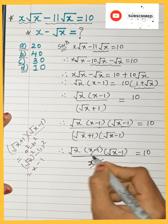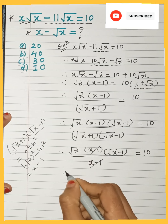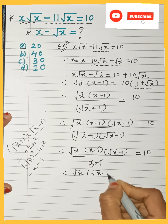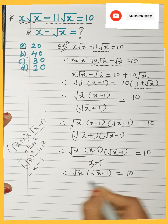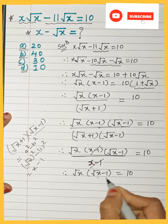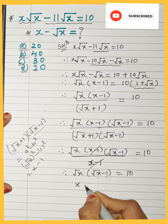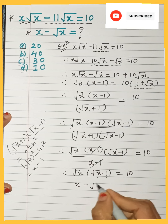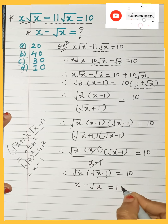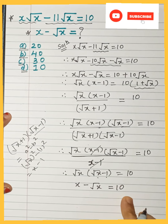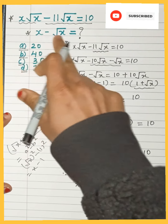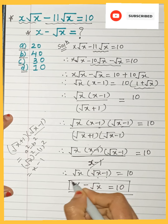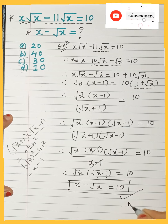Now (x − 1) in the numerator and (x − 1) in the denominator cancel each other. We are left with √x(√x − 1) = 10. Opening the bracket: √x × √x = x and √x × 1 = √x, so x − √x = 10.